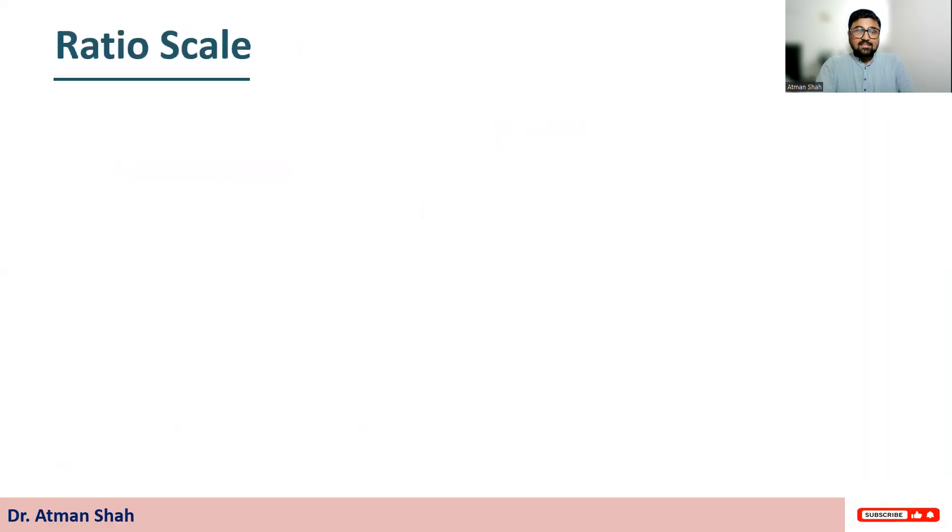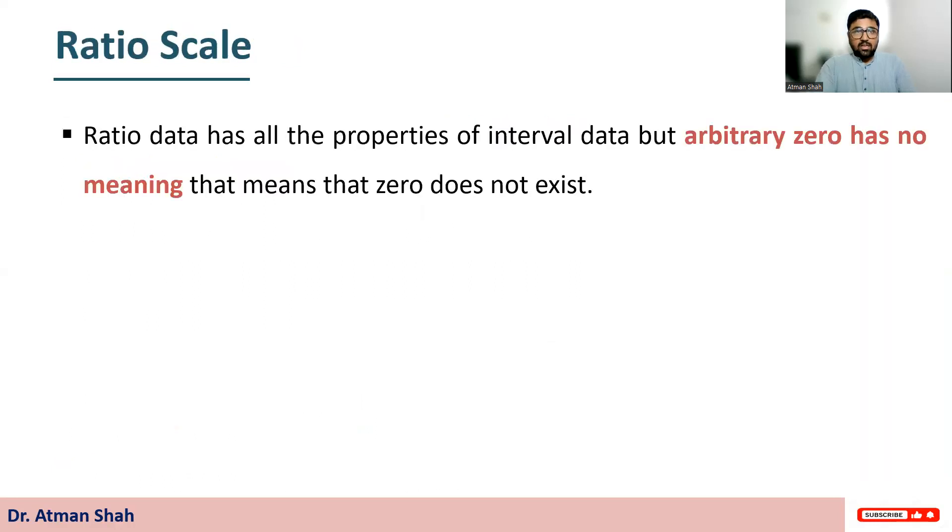And last is the ratio scale data. Now, ratio data has all the properties of interval data, but arbitrary zero has no meaning. That means zero does not exist. We don't have data points when the value is zero.